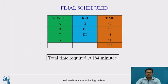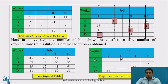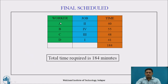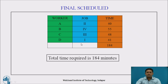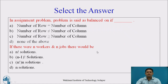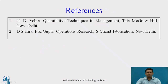The assignment is shown in the summary table: worker A is assigned job 2, B is assigned job 4, C is assigned job 3, and D is assigned job 1. Only one job is assigned to each worker. The total minutes required to complete all jobs is 184. Hope you have selected the correct answers for today's session. Thank you.